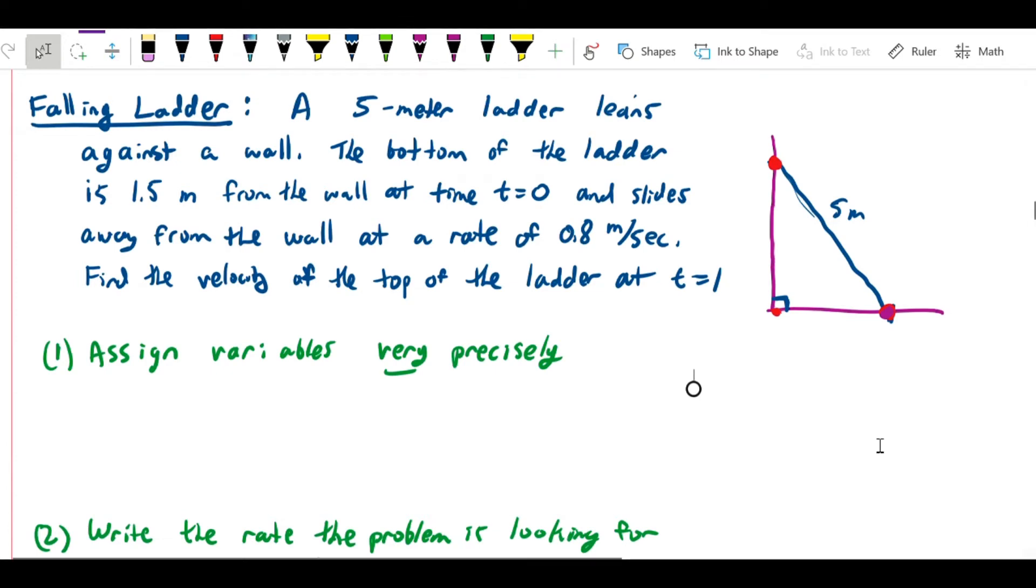One of the classic problems in related rates is the falling ladder problem. In this problem, we have a 5-meter ladder that leans against a wall, and the bottom of the ladder is 1.5 meters from the wall at time t equals 0, and it slides away from the wall at a rate of 0.8 meters per second.